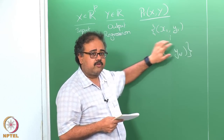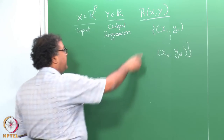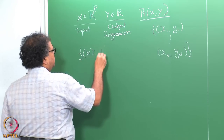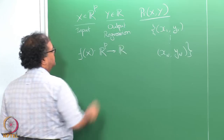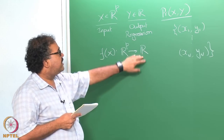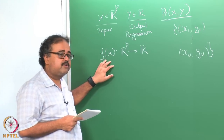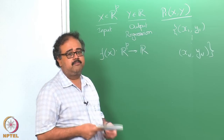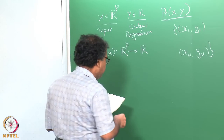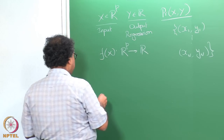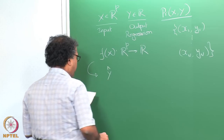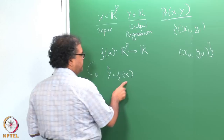The training data consists of pairs (x1, y1), (x2, y2), and so on. The goal is, given such a set of training data, to learn a function f(x) that maps the p-dimensional input space to the real line. The function f takes any input and produces a number. For example, f could be a straight line, as we saw earlier, where y-hat = f(x).